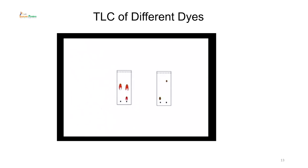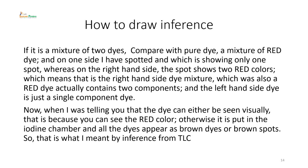Different dyes show different TLC profiles and the upper dotted line represents the solvent front. To draw inference from TLC: if it is a mixture of two dyes, compare with pure dye. A mixture of red dye spotted on one side showing only one spot versus another side showing two red colors indicates that the second sample contains two components. The left-hand side dye is a single component, while the right-hand side contains two. Dye spots can be visualized visually or placed in an iodine chamber where all dyes appear as brown spots.